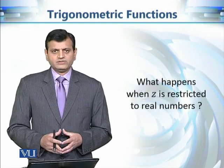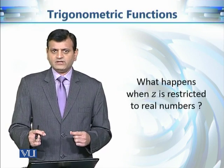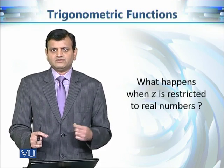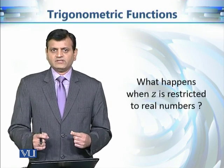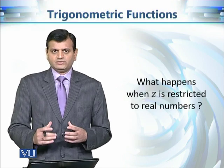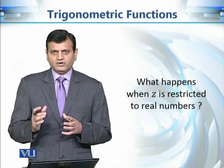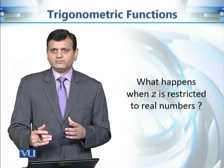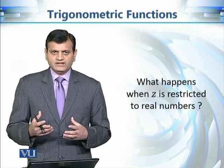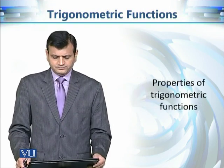What happens when z is restricted to real numbers? From the definition of sin(z), if we restrict z to a real number x, it is exactly the same as in real analysis — it becomes sin(x). So our first check is passed. The check is: if we restrict complex numbers to real numbers, do we get the same result as in real analysis? Yes, it holds.